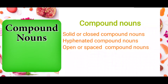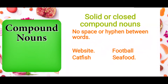Compound nouns are divided into three groups: solid or closed compound nouns, hyphenated compound nouns, and open or spaced compound nouns. Solid or closed compound nouns have no space or hyphen between words — for example, 'website' has two words but no space. Examples include: website, football, catfish, and seafood.